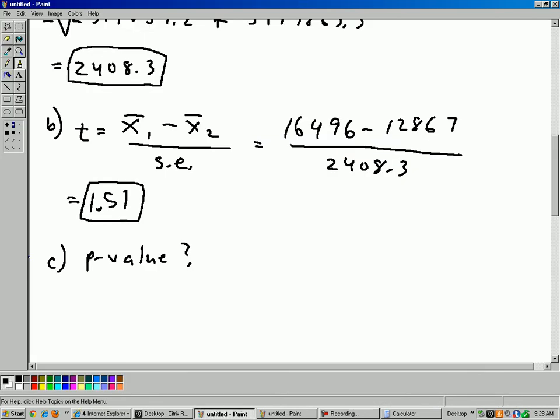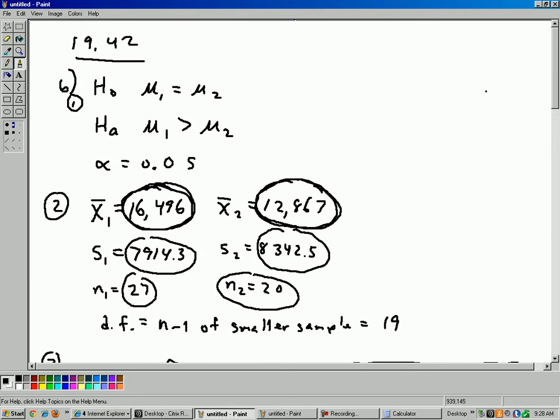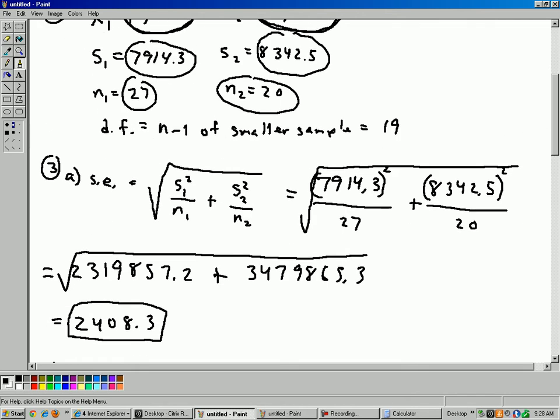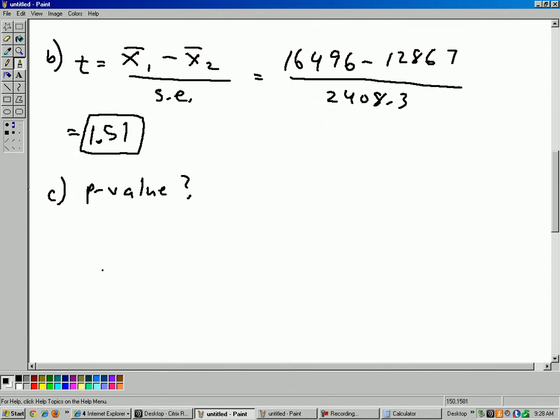Back to the alternate hypothesis, alternate says mu is greater than, so it's just one-tailed test. So let's draw a picture of what's going on here. So here's our t-distribution. Here's 1.51. I want to know what is that. And that represents the probability of getting this difference between men and women in the samples just by random chance.